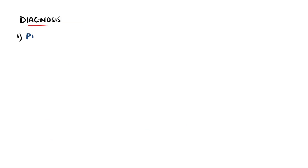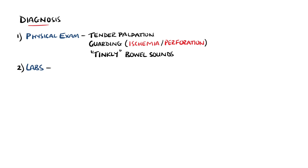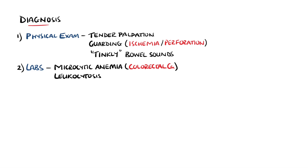In terms of diagnosis, the physical exam will typically show tenderness on palpation, but signs such as guarding or rebound tenderness may suggest a perforation or ischemia of the bowel. Bowel sounds are characteristically tinkly, sounding like bubbles rising. Blood tests are done as the full blood count may show a microcytic anemia, which would be consistent with a colorectal cancer, while leukocytosis may suggest ischemia or perforation, especially if combined with a raised lactate.